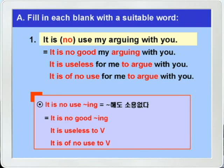주의할 것은 to부정사의 의미상의 주어를 표시할 때는 for + 목적격을 써야 하니까 'to argue'에는 'for me'가 나온 것입니다. 이것을 특히 조심해야겠습니다.